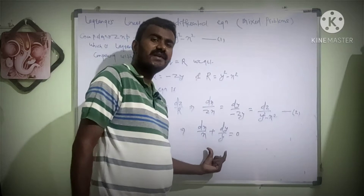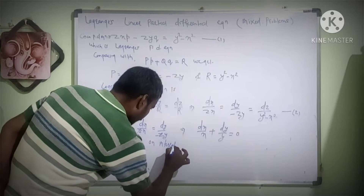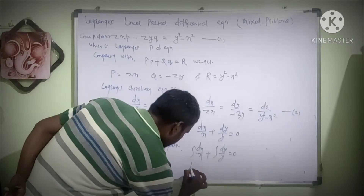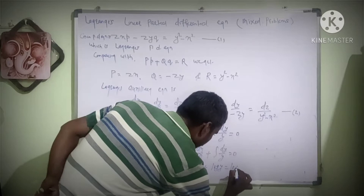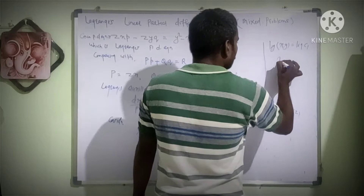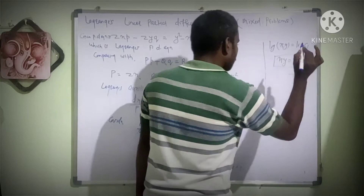On integrating dx by x plus dy by y equal to 0, the integration of 1 upon x is log x and integration of 1 upon y is log y, with constant log c1. Using log a plus log b equal to log ab, we get log xy equal to log c1, so xy equal to c1. This is our first solution obtained by the method of grouping.